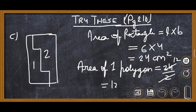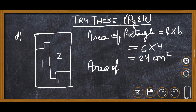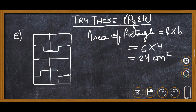This is part D of the same 'Try These.' The figure is again divided into two equal parts — this is the first part and this is the second part. So the area of one polygon is 24 divided by 2, which equals 12 centimeter square.